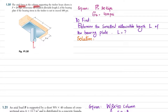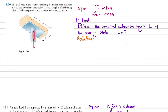The statement is: the axial force in a column supporting the timber beam shown is 20 kips. Determine the smallest allowable length l of the bearing plate if the bearing stress in timber must not exceed 400 psi. The column supports a load P of 20 kips, this is the bearing plate, and this is the timber beam supported by it. The width is given as 6 inches.